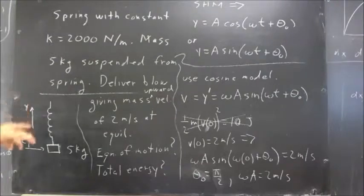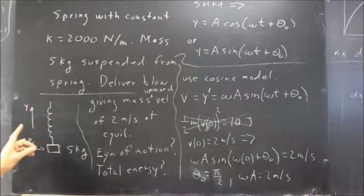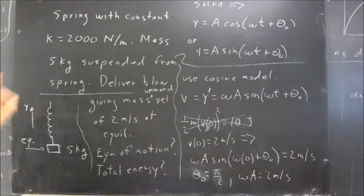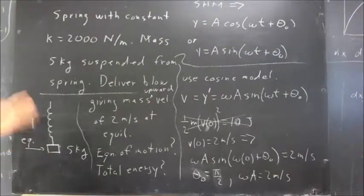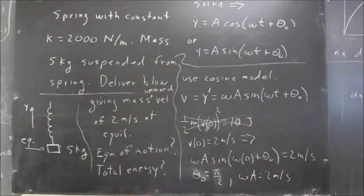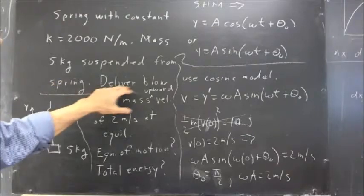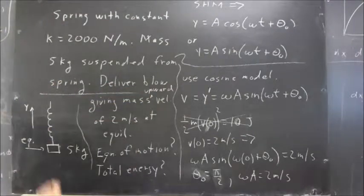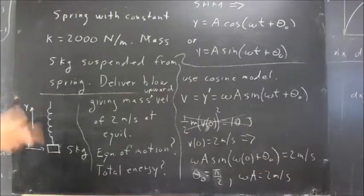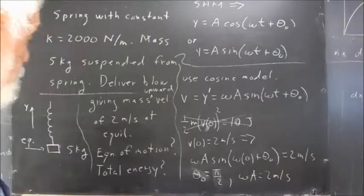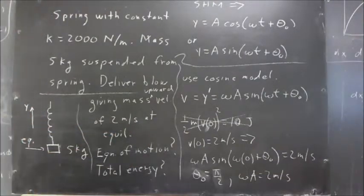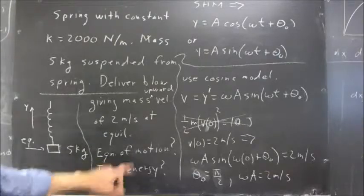We've got to assume the y value, the upward y direction is the positive direction for this motion. So what we do, we deliver a blow upward. We give this thing a good punch underneath, giving it a 2 meter per second velocity at the equilibrium position. Question, what's the equation of motion?